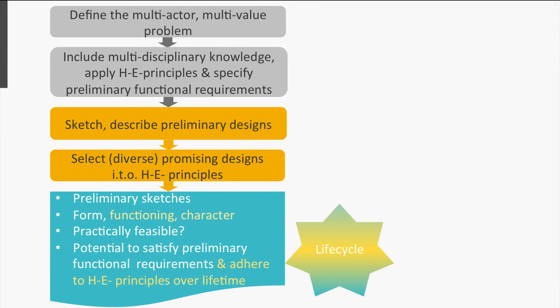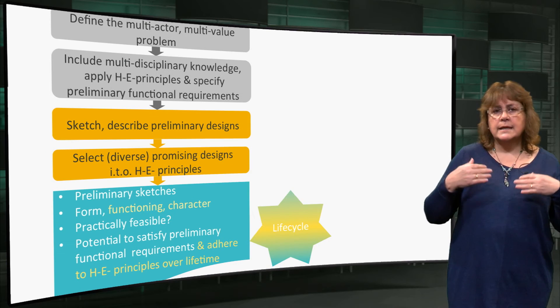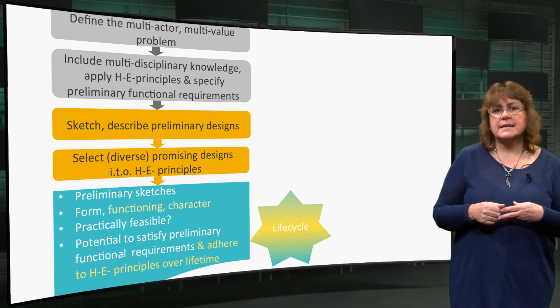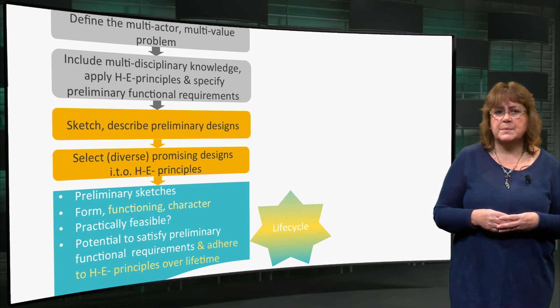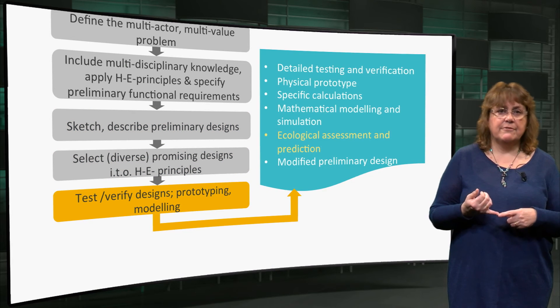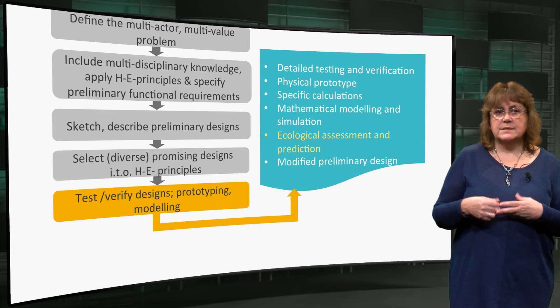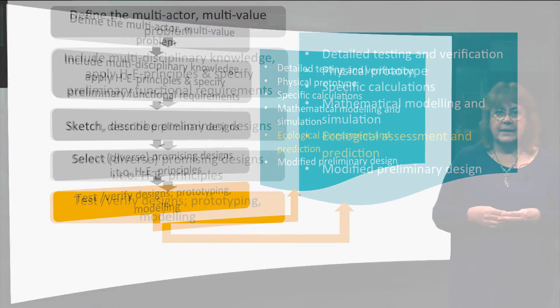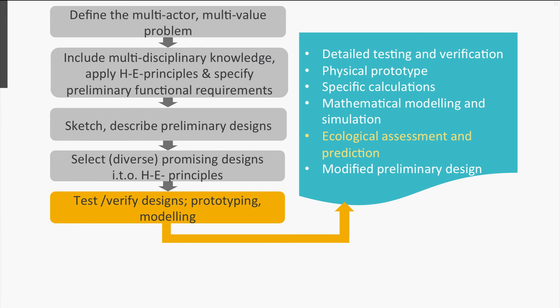Steps 3 and 4: The sketching and subsequent selection of promising designs. These are similar to the conventional method, except that different knowledge is brought to the table, the functioning and character of the ecosystem is included, and the time horizon covers the life cycle of the artefact that is being designed. Step 5: Test or verify the designs through prototyping and modelling. Ecological assessment and prediction are the additional items used in this step.